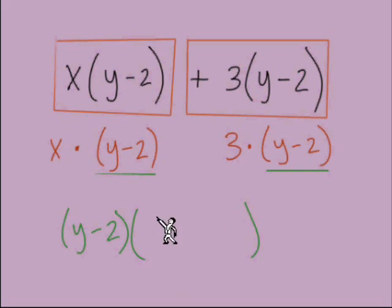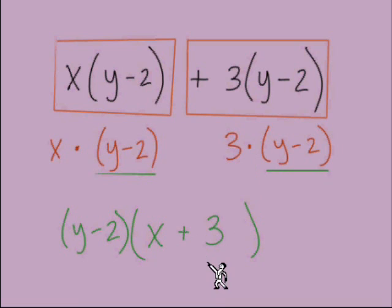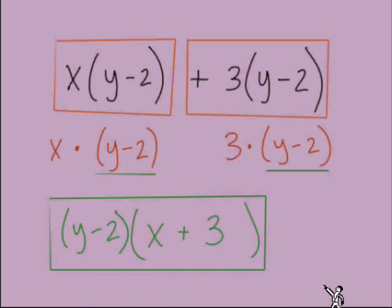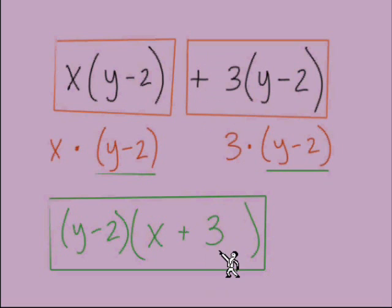The GCF goes out in front of parentheses. We set up a new set of parentheses with the leftover terms inside. Leftover from the first term we have an x; leftover from the second term is a positive 3. And there's our answer in factored form. This is how we handle problems where we see two big terms, each containing a matching quantity in parentheses. We identify that quantity as the GCF, put it out front, and drop the leftovers into the second set of parentheses.